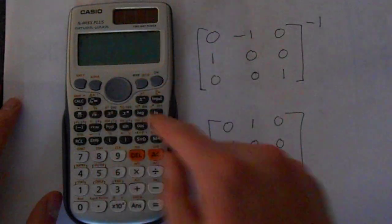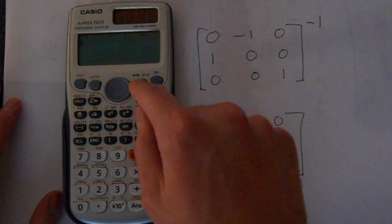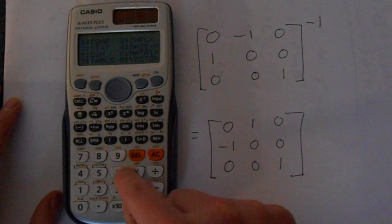So let's do this on the calculator. This is the answer we expect. So here's how you do it. You press mode, and then you put it into matrix mode, so that's pressing number 6 here.